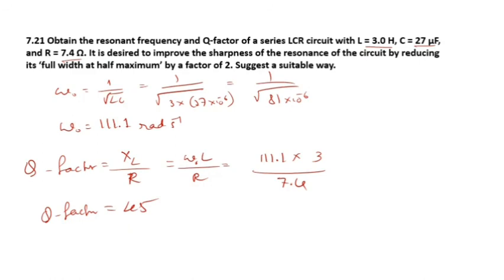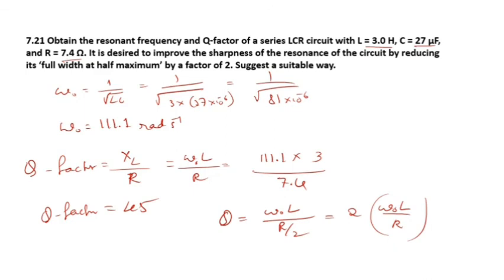To improve the sharpness of resonance by reducing full width at half maximum by a factor of 2, the Q factor must be doubled. Since Q = ω₀L / R, to double Q we must reduce the resistance to half its original value (from 7.4 ohm to 3.7 ohm).